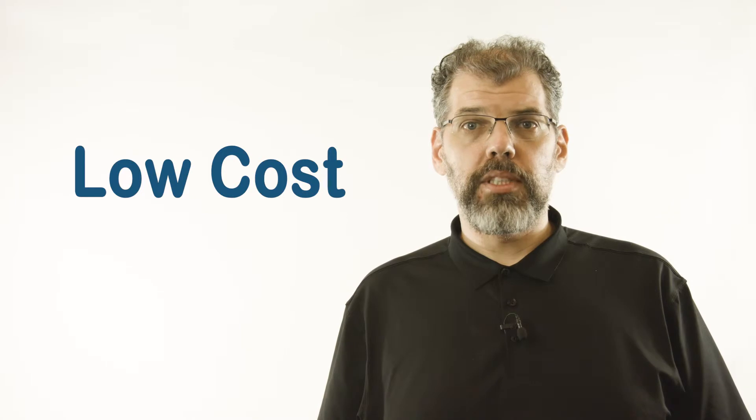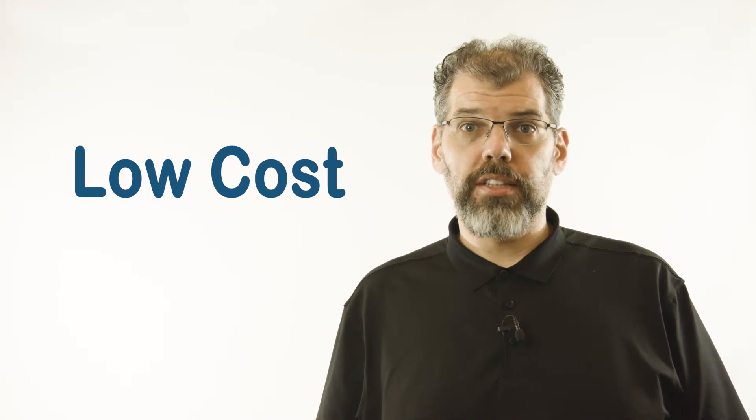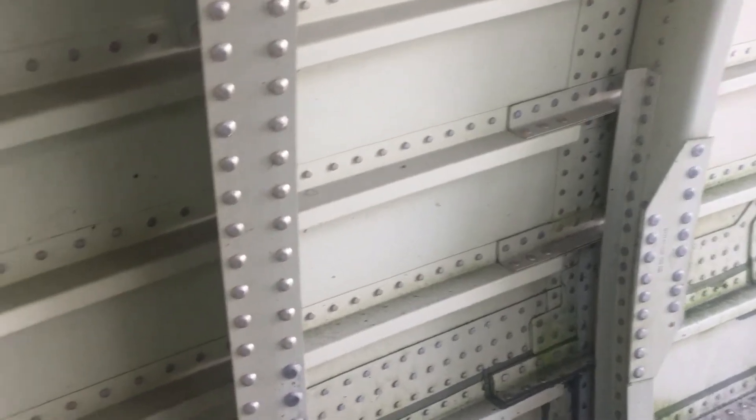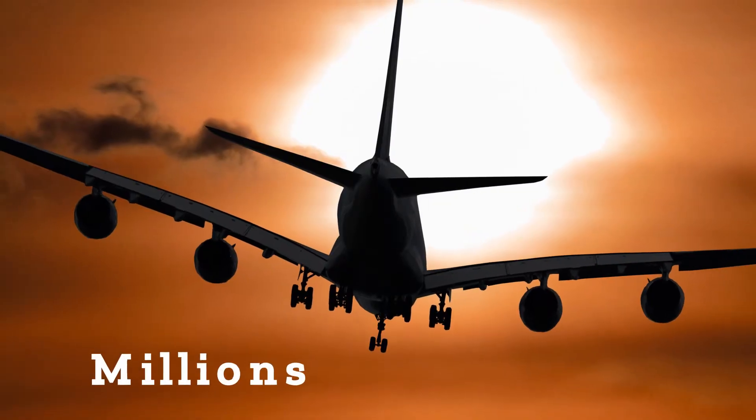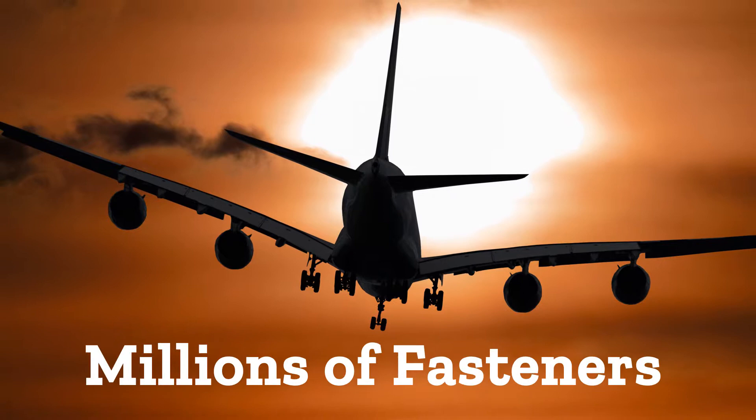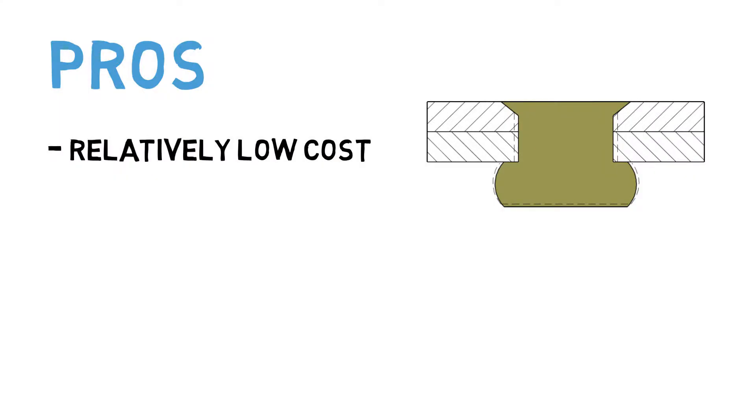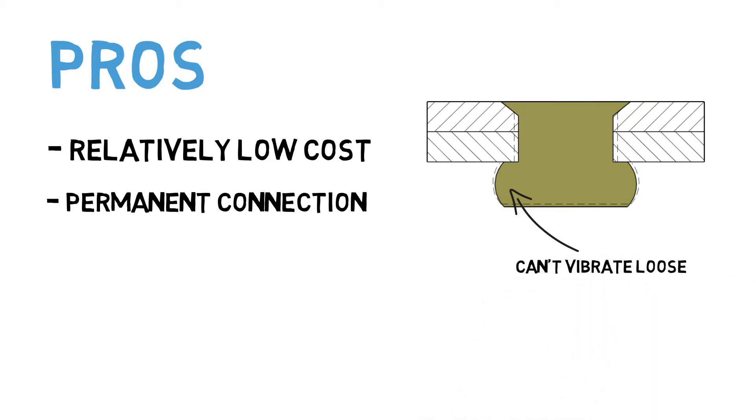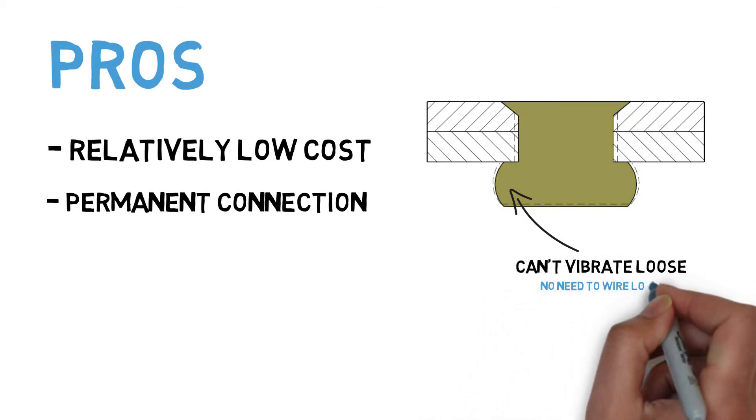Rivets can come with a variety of head styles and can even come in the form of rivet wire, where both heads of the fastener are formed during installation. Rivets overcome many of the disadvantages of threaded fasteners. They are extremely cheap, not requiring any additional machining steps to produce the fastener itself. This can be a significant overall cost factor when you consider that a modern commercial aircraft can contain millions of fasteners. Rivets also form a permanent connection that cannot vibrate loose, negating the need for costly wire locking of the individual fasteners.